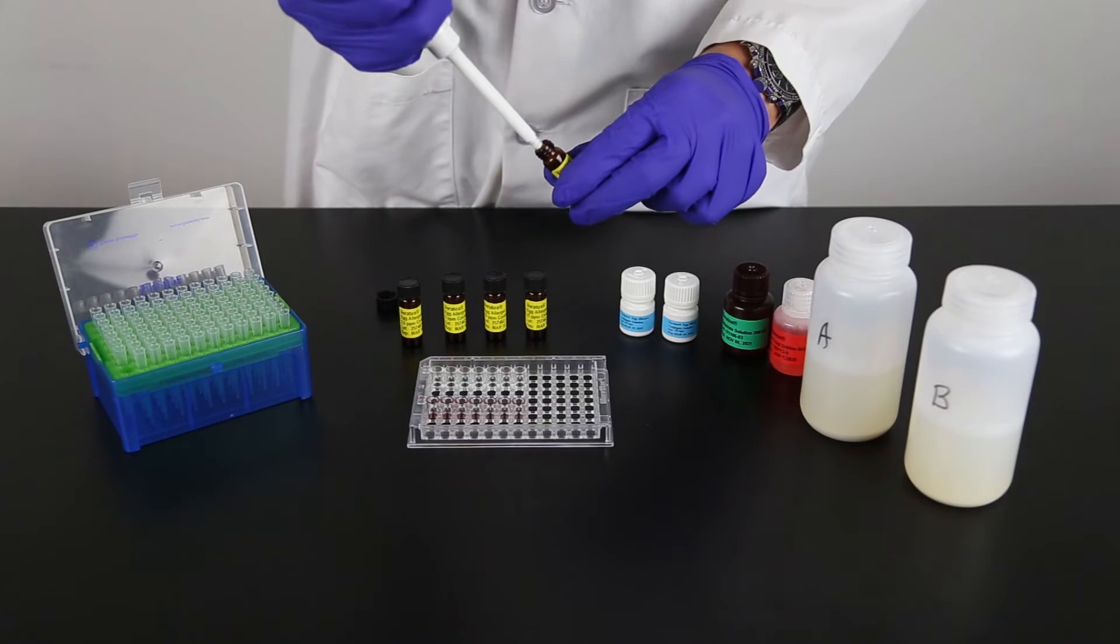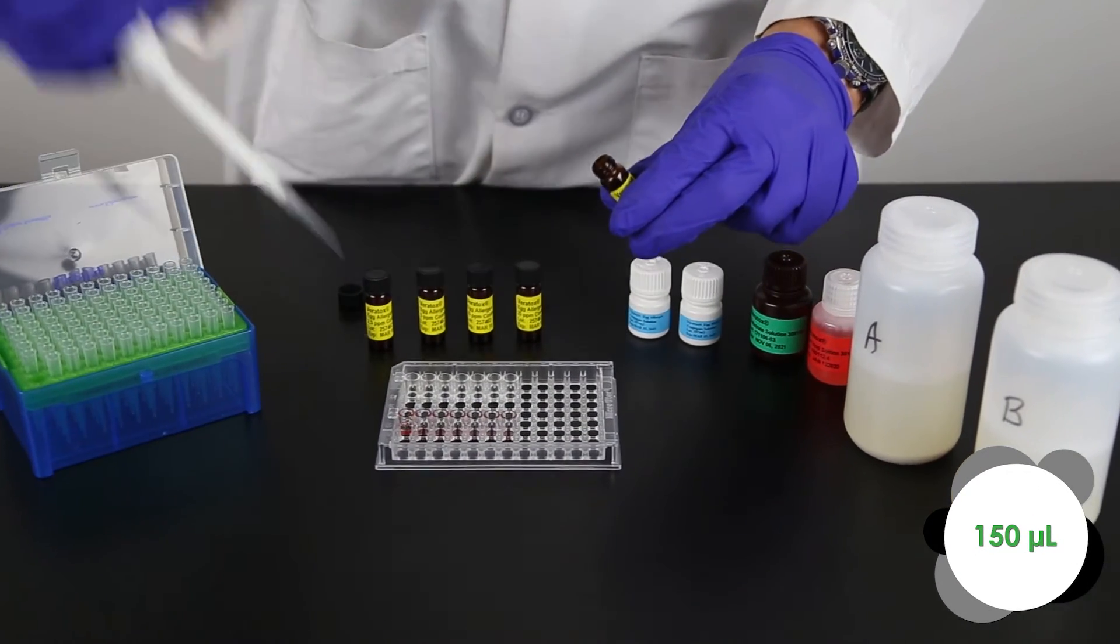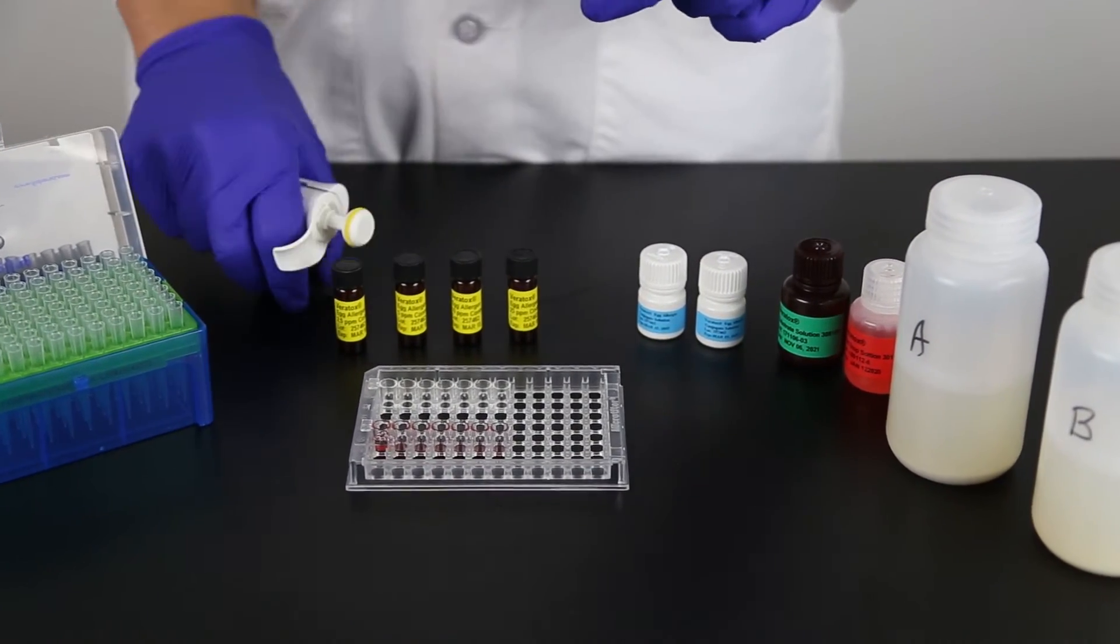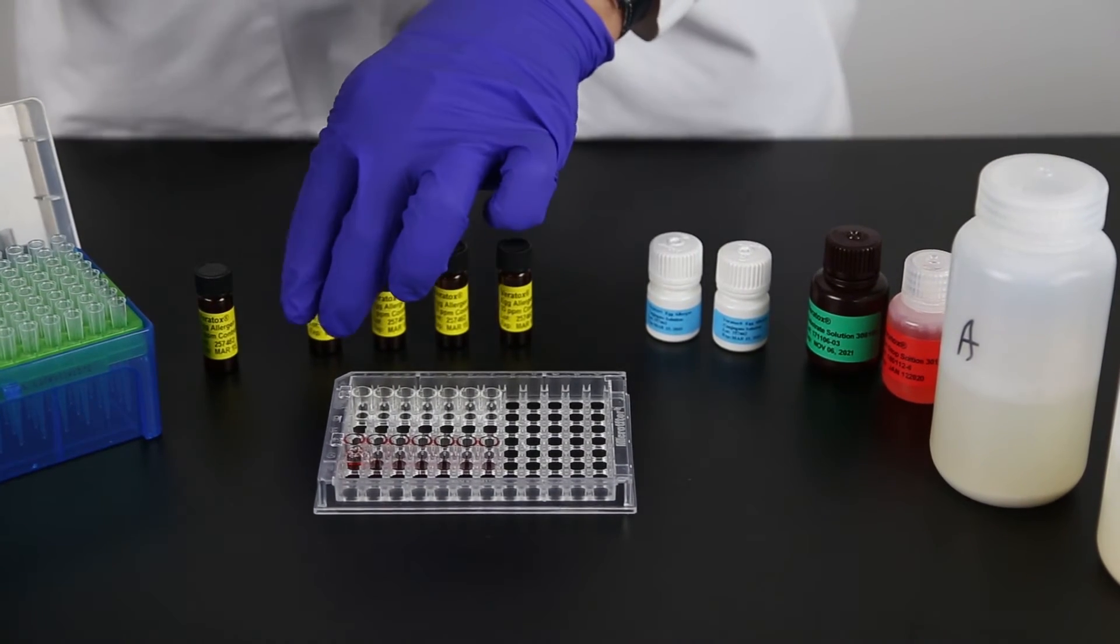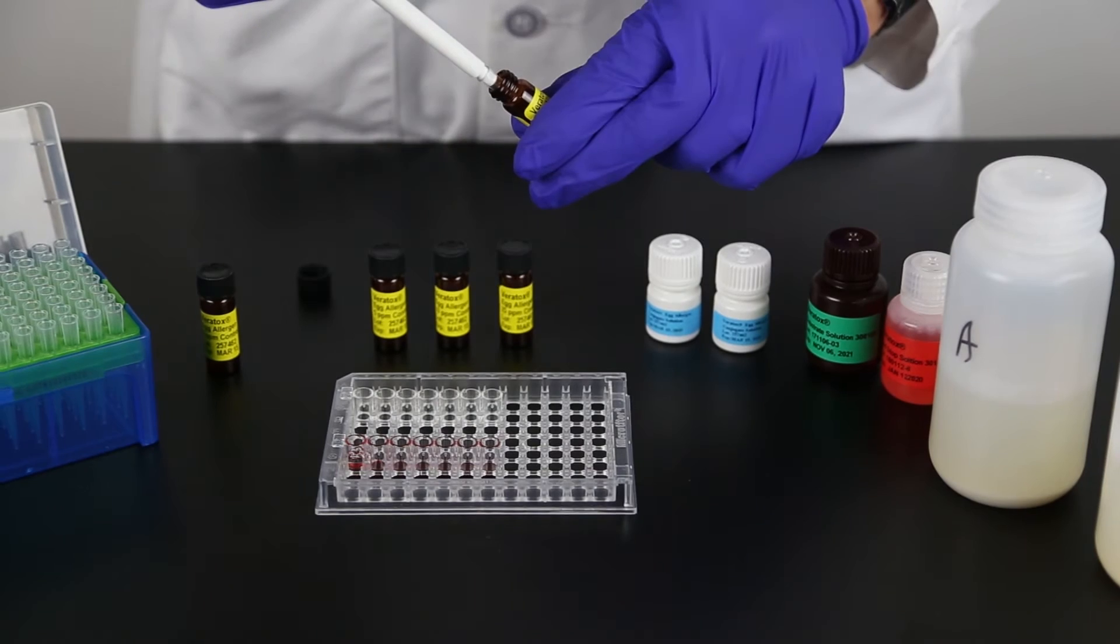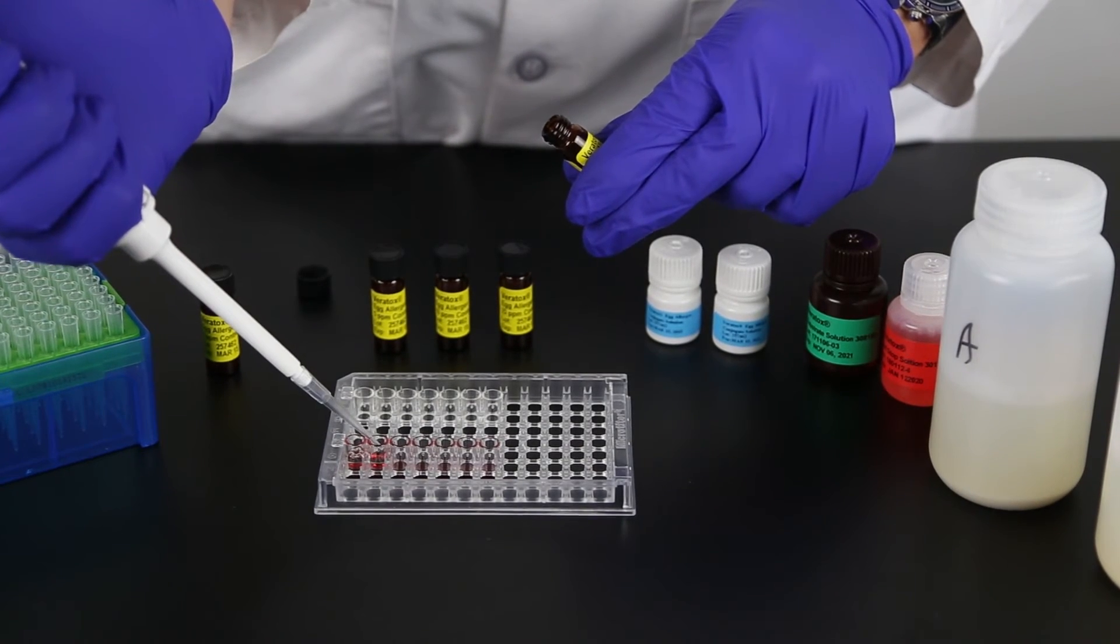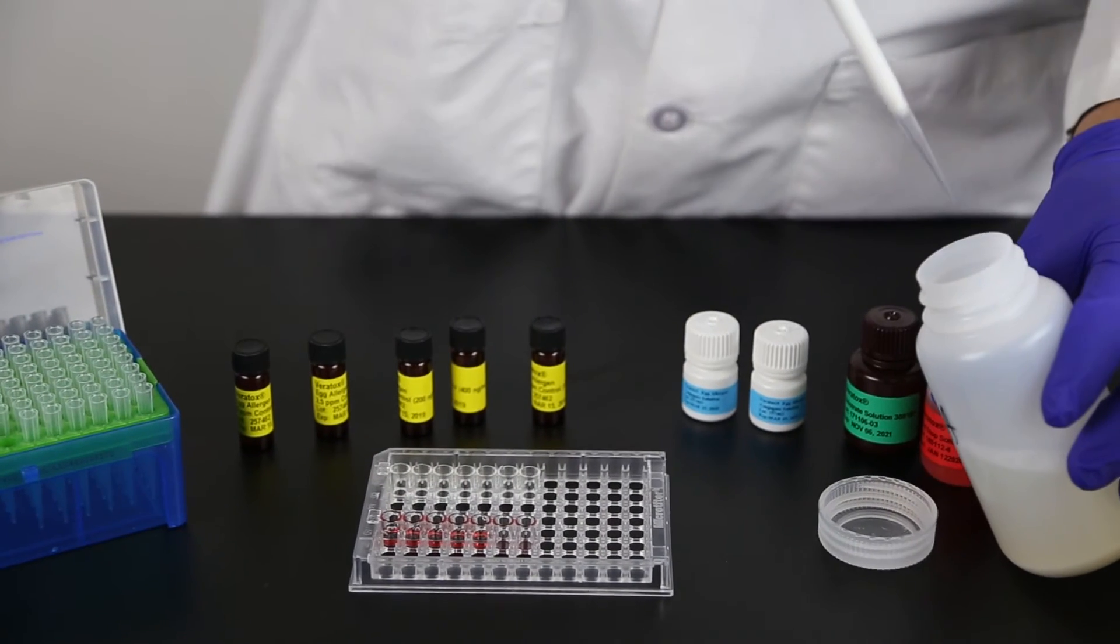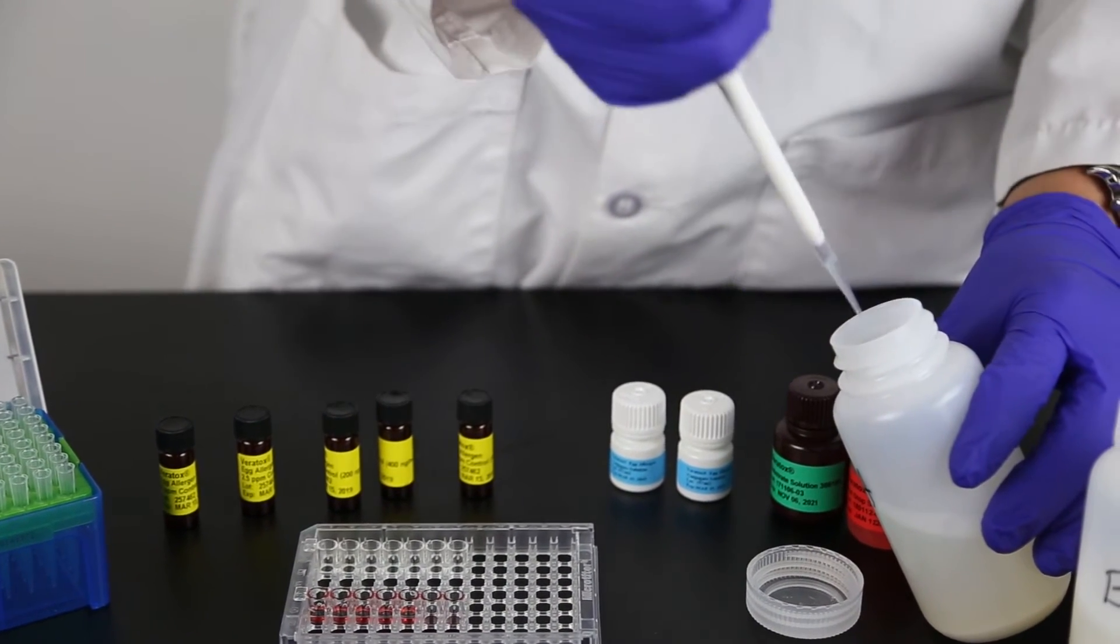Using a new pipette tip for each, transfer 150 microliters of each control and sample extract to the appropriate red marked transfer wells. Do not use more than two full strips, 24 wells, at one time.